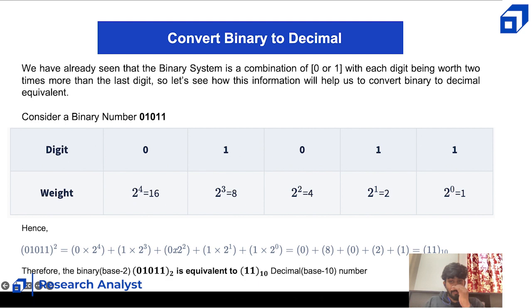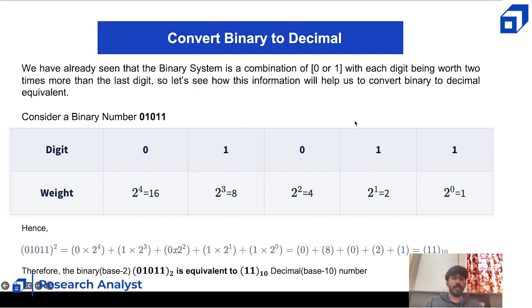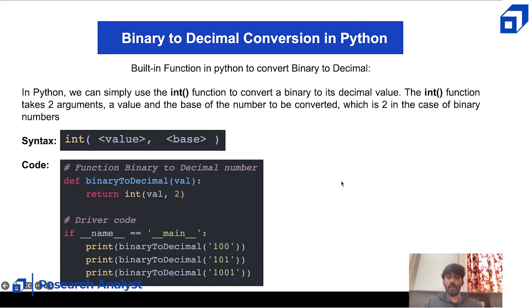It's a very simple method. If the binary number is 10011, you'd compute 1×2^4 + 0×2^3 + 0×2^2 + 1×2^1 + 1×2^0 = 16 + 0 + 0 + 2 + 1 = 19 base 10. You can easily calculate from binary to decimal using this method. Now let's look at the code implementation.